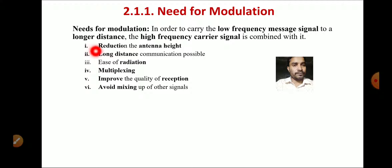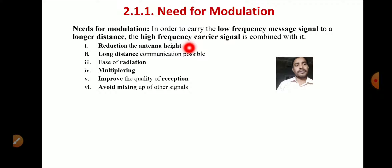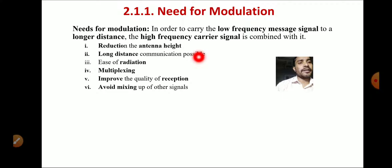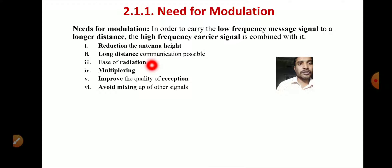There are some advantages of modulation. First, it reduces the antenna height — when the very high frequency carrier is combined with the low-frequency message signal, the signal power and frequency become enhanced, reducing the antenna height required. Second, long-distance communication is possible as frequency and power become high. Third, radiation becomes easier after modulation. Fourth, multiplexing is possible after modulation.